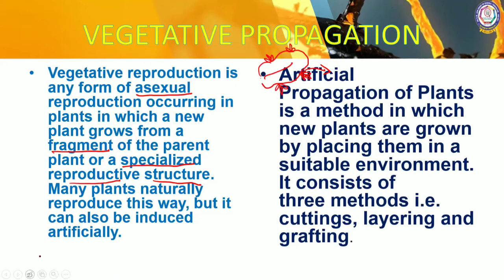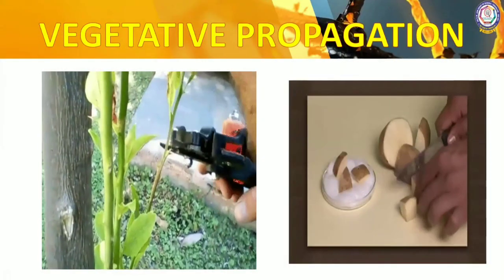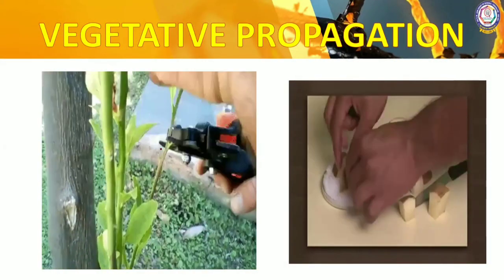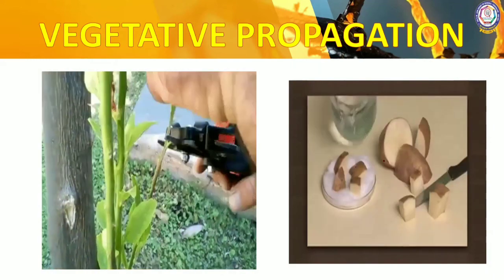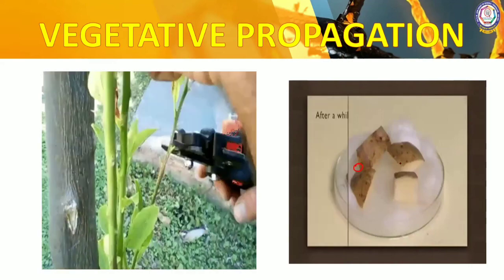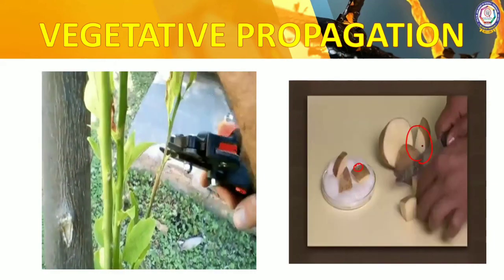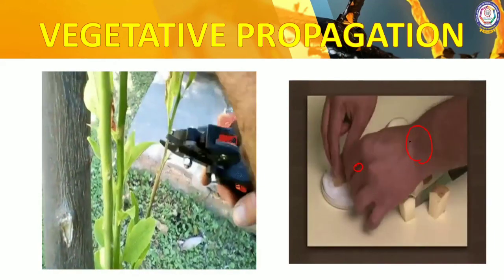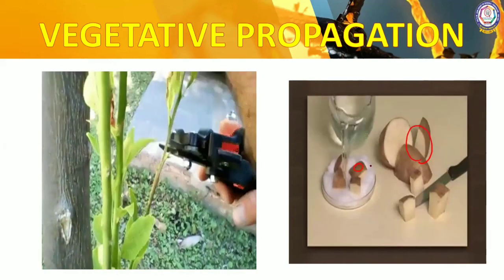Artificial propagation is a method in which new plants are grown by placing them in a suitable environment. It consists of three methods: cutting — example money plant; layering — example jasmine or rose; and grafting — example mango. Micropropagation is also included. For cutting, the potato is another example — the eye of the potato, when kept separately in a medium, grows into tiny plantlets. Potato is a stem modified as a tuber, and this tuber develops a new plant.